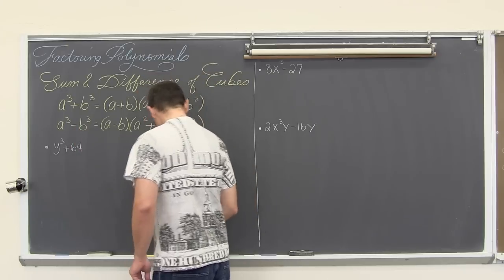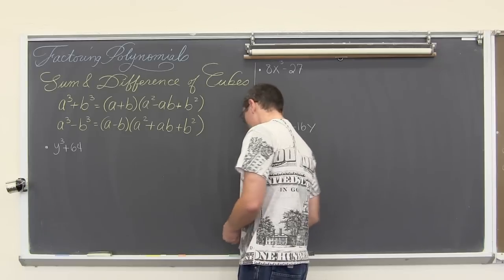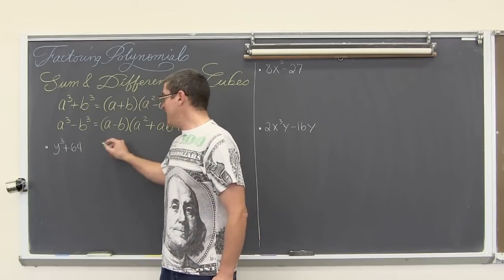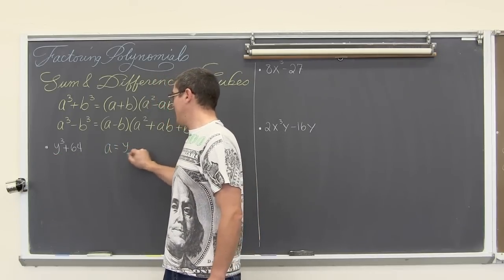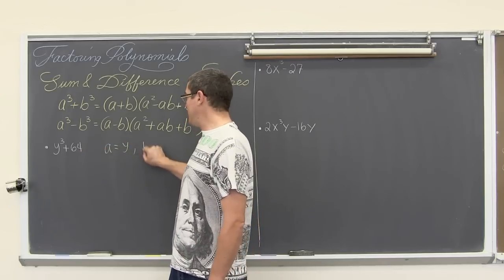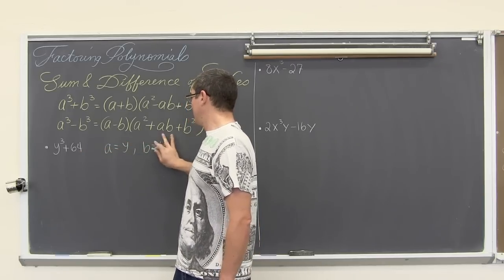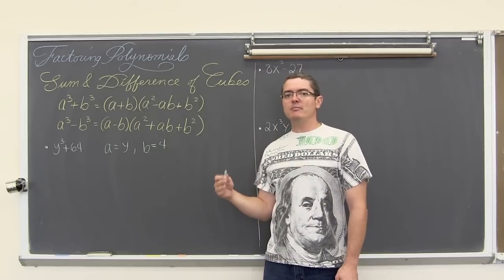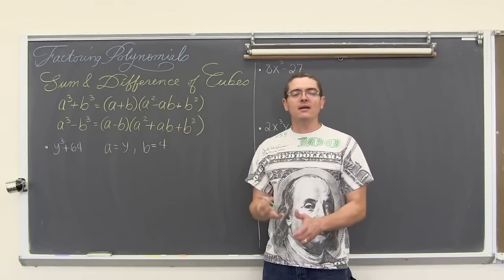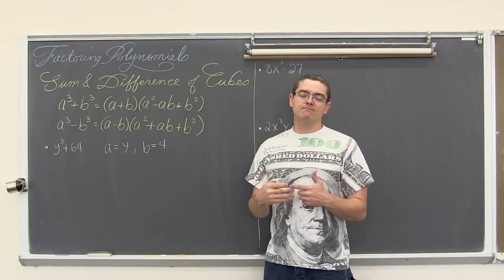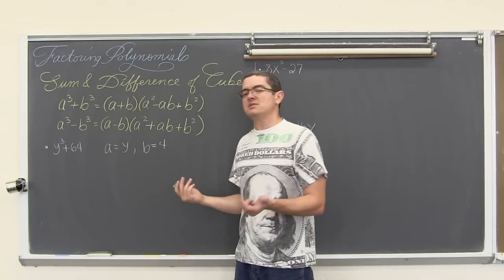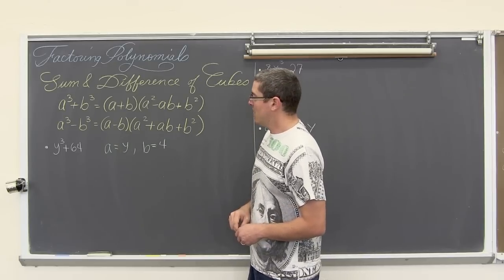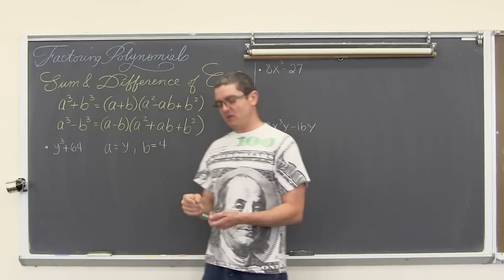So, y cubed plus 64. We are going to identify a and b. Let's pick a different color — green. We are going to cube root the first term, so a is equal to y. We are going to cube root the second term, so b is equal to 4. If you identify a and b before you start plugging into the pattern, that might help you minimize your mistakes. For teaching purposes, I am writing out a and b. So we have a sum of perfect cubes.